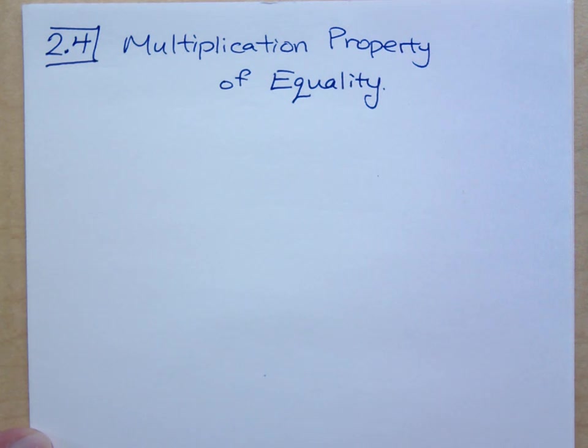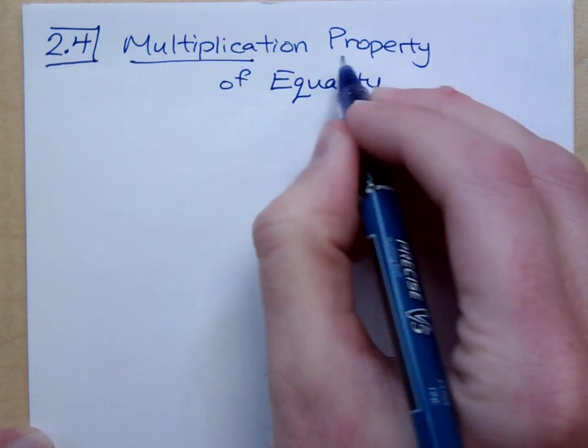We now want to look at the multiplication property of equality. If you're following along in your book, it calls this the division property. I don't like that because I want you guys to be prepared for what you're going to see in 0308 and 0310. This is the property that they use, the multiplication property.